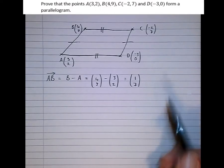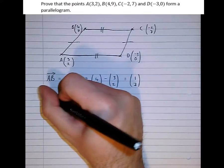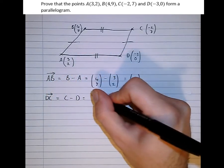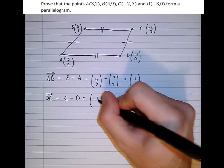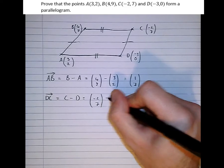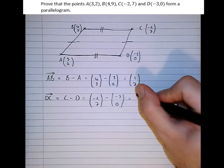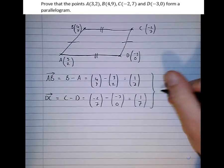Now if this truly is parallel, then DC should be the same. Let's check. DC is C minus D, equals (-2,7) take (-3,0), equals (1,7) also. So therefore